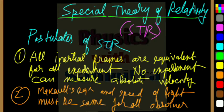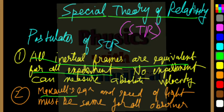The first postulate stated that the inertial frames are equivalent for all experiment. All inertial frames are equivalent for all experiment. But the second one states that the Maxwell's equations and speed of light must be same for all observer. Let me show you with an example.